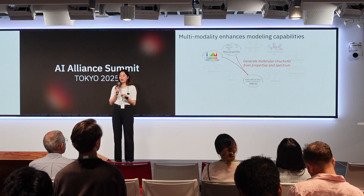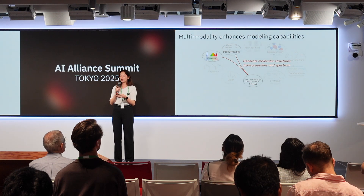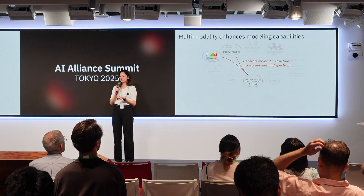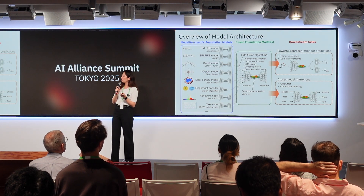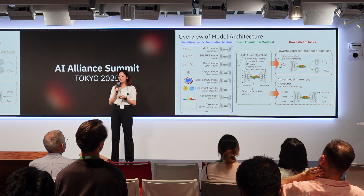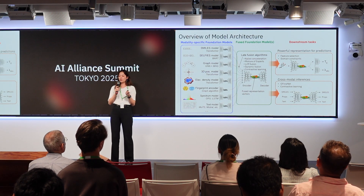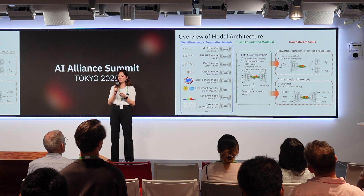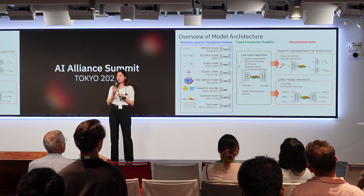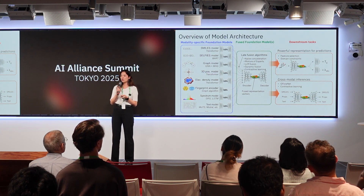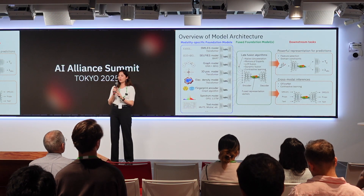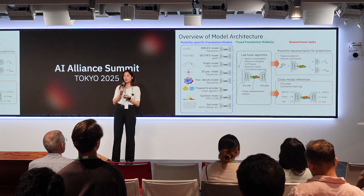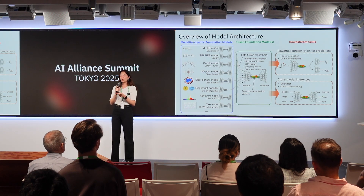For example, we would have some basic properties and the optical spectrum and can then translate this to SMILES. We have all these different models and use a late fusion approach where different types of algorithms fuse those feature representations, and can then do the downstream tasks — mainly property prediction and cross-modal inference.